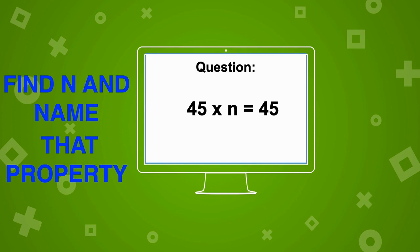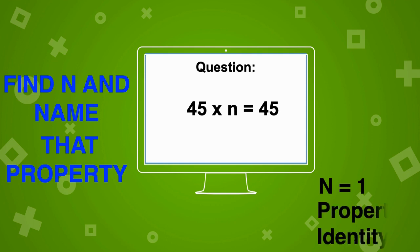45 times n is equal to 45. This one looks tricky — think hard! If you said n is equal to 1 and the property is the identity property, you are doing beautiful, marvelous work!